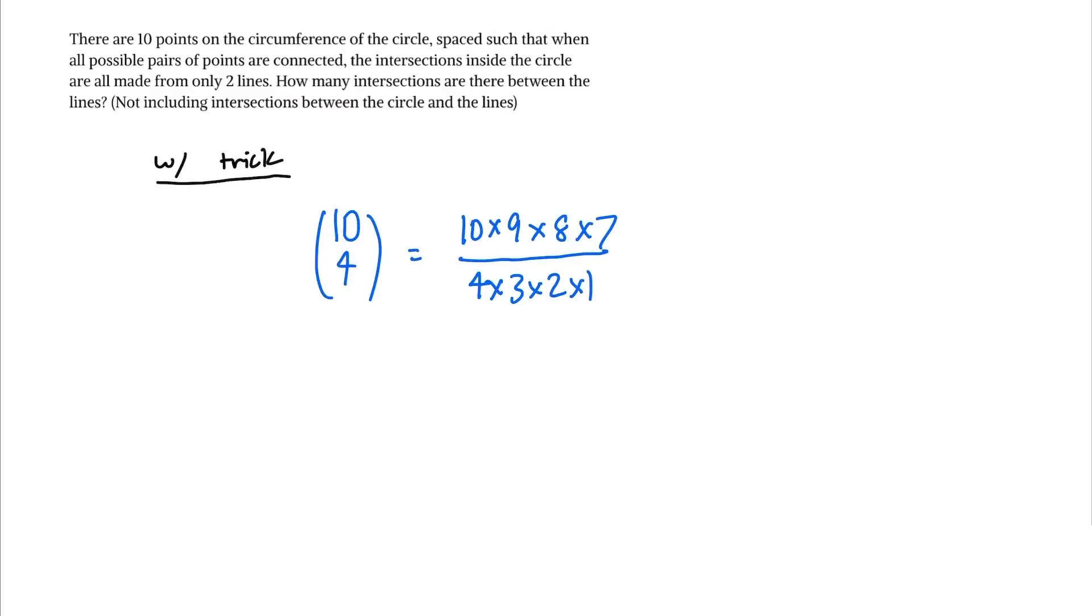But we can actually just do some canceling. We can cancel the 4 and the 2 on the denominator and the 8 in the numerator because we have 8 over 8 which equals 1, and we can remove the 3 in the denominator and turn the 9 in the numerator to a 3. So then we have 10 times 3 times 7 equals 210.